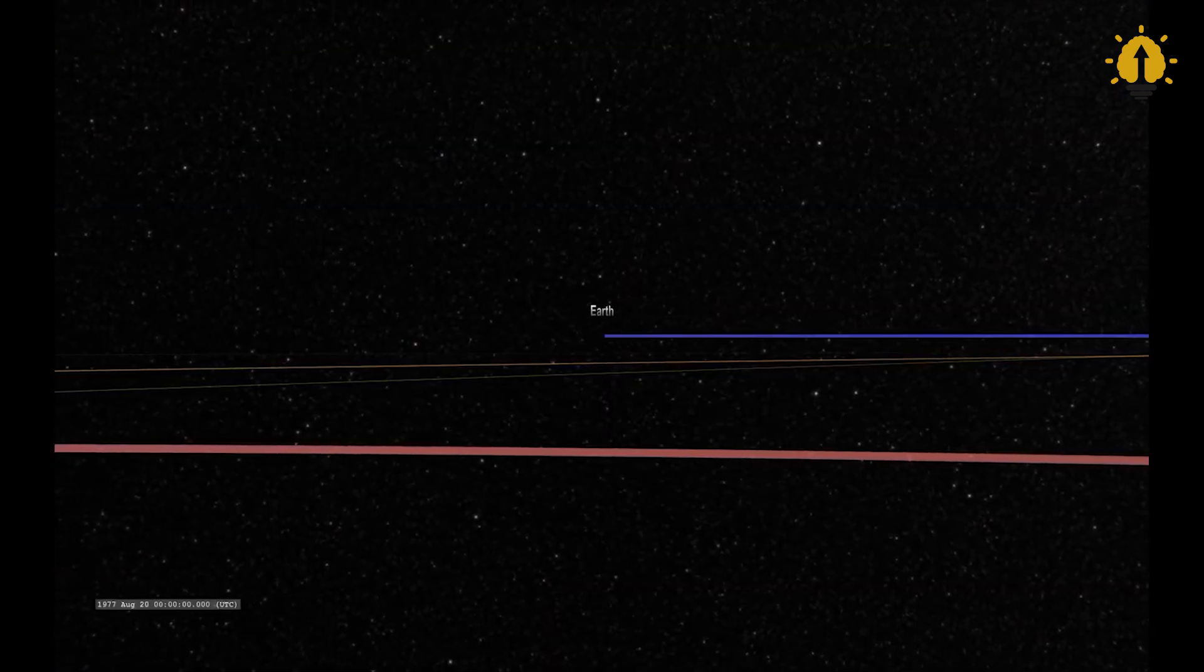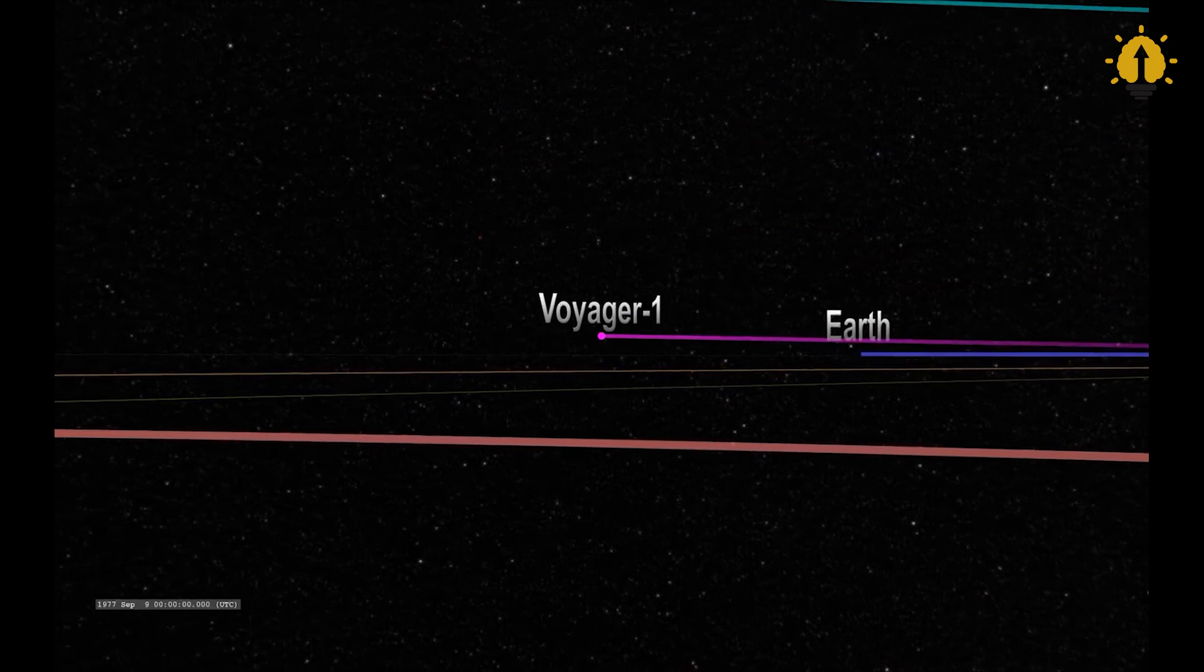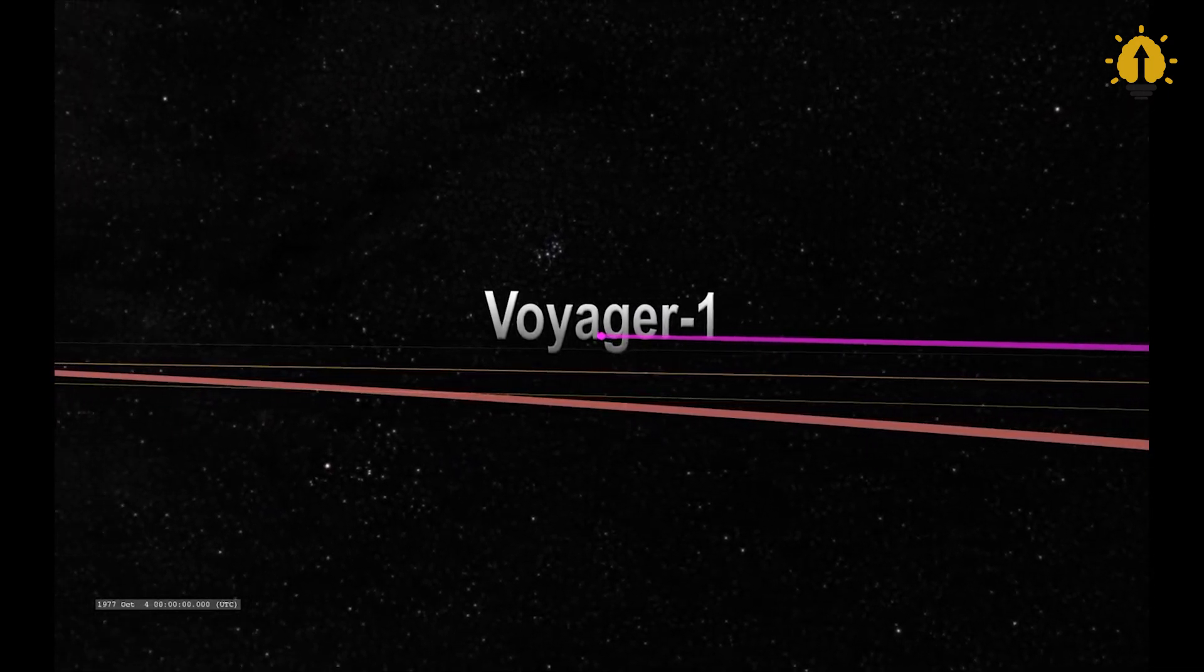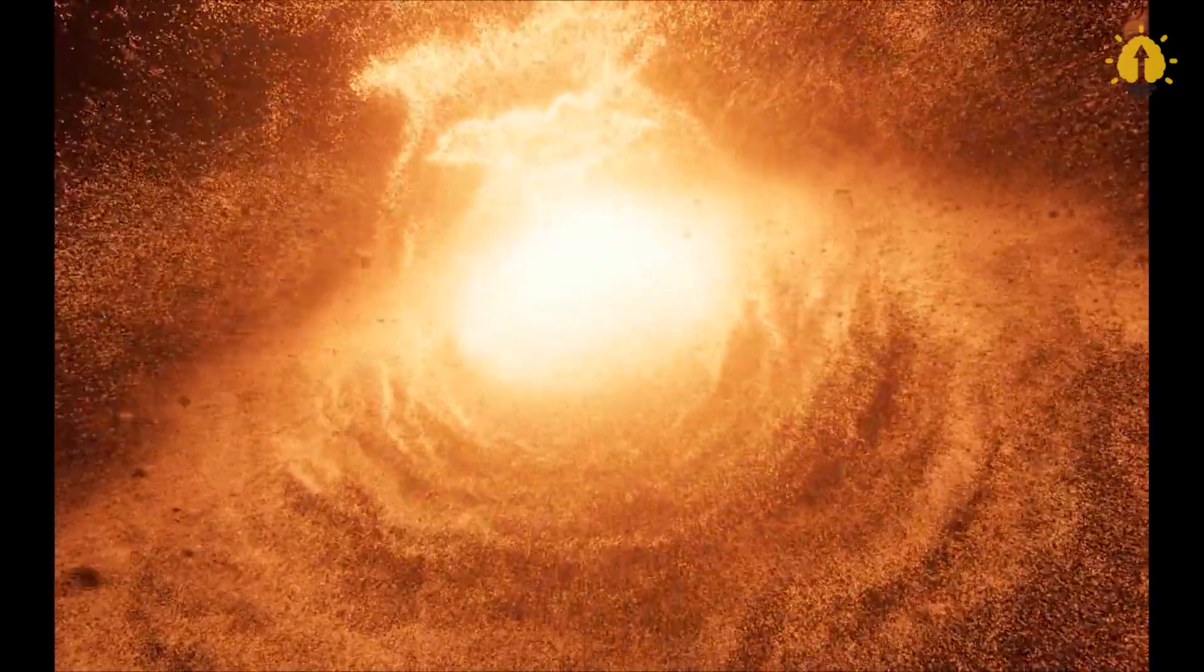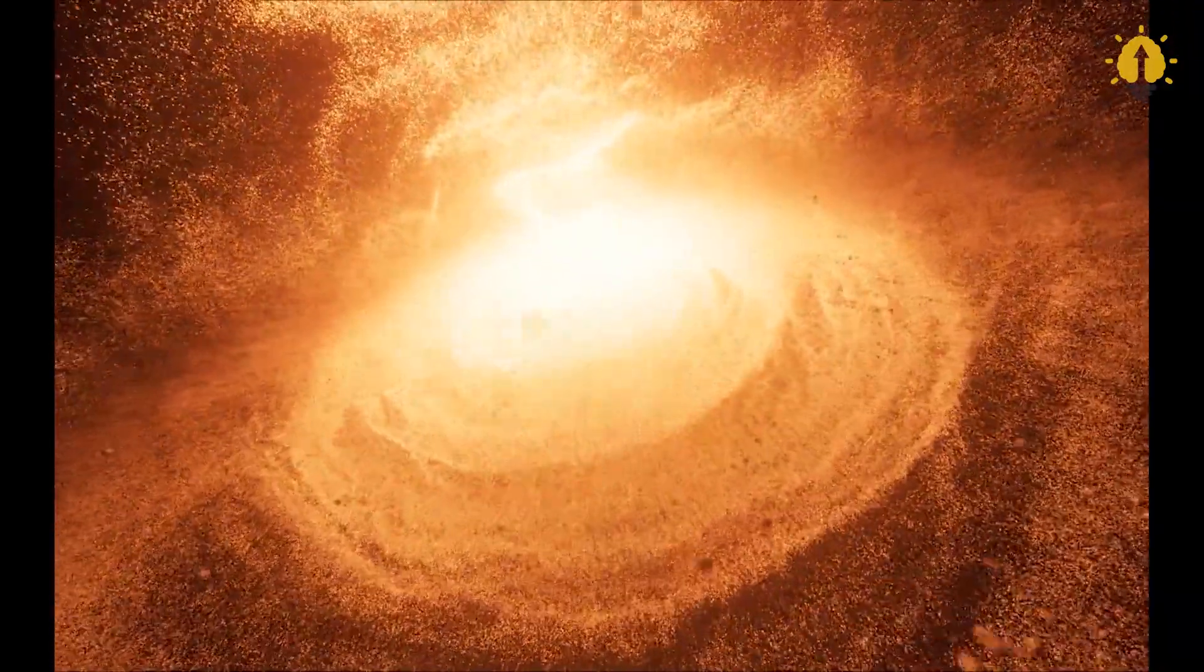The ageless explorers, Voyager 1 and Voyager 2, continue their solitary journeys through interstellar space, leaving behind the planets and moons they once called home. But what lies ahead for these indefatigable travelers? It's a cosmic guessing game, but here are some possibilities to ponder.